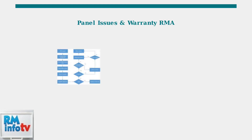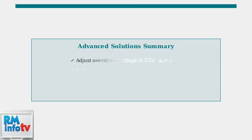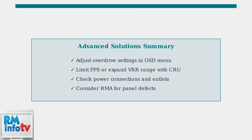If flickering occurs only at specific refresh rates, this indicates a potential panel defect. When all troubleshooting fails and your monitor is under warranty, the RMA process provides manufacturer replacement or repair. Advanced troubleshooting targets overdrive artifacts, VRR range limitations, power instability, and hardware defects — these systematic approaches resolve most persistent flickering issues when basic solutions fail.